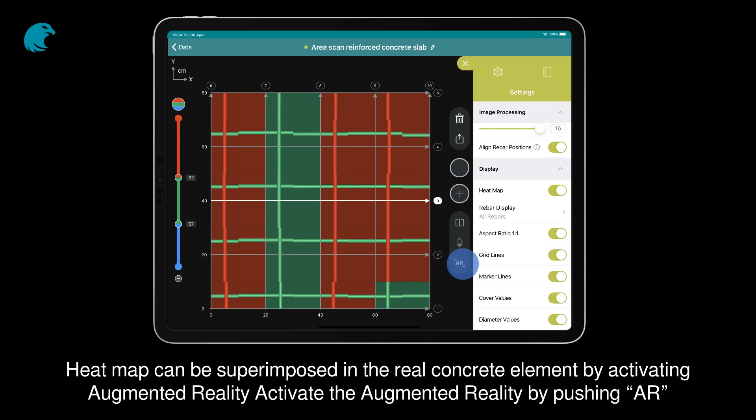Heat map can be superimposed in the real concrete element by activating augmented reality. Activate the augmented reality by pushing AR.